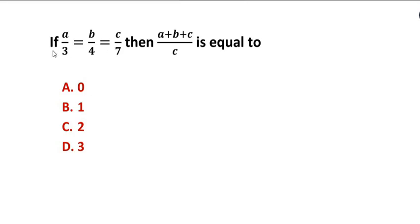Let us see what the question says: If a/3 = b/4 = c/7, then (a+b+c)/c is equal to what?